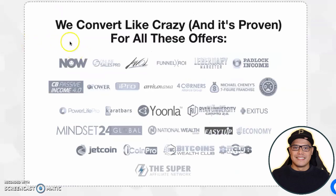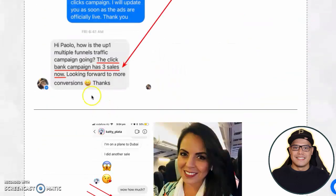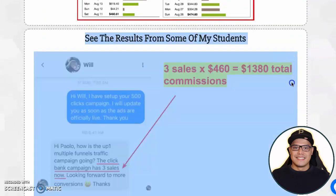For those of you asking what kind of products are working for my traffic — these are some of the companies that work well: anything to do with make money online, business opportunity, network marketing, multi-level marketing. As long as it's in the make money online niche, it's working for my traffic source. You can use my traffic agency and we will help you get sales if you are promoting any of these companies or any affiliate offer in the make money online space.